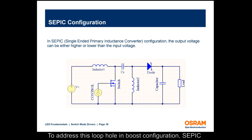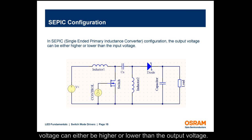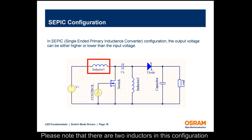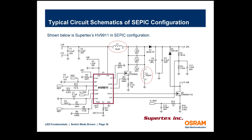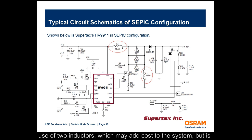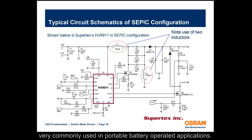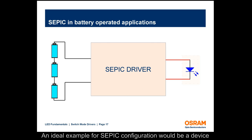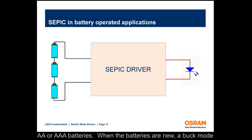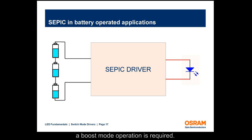To address this loophole in boost configuration, SEPIC configuration is used. In a SEPIC configuration, the input voltage can either be higher or lower than the output voltage. Note that there are two inductors in this configuration compared to only one in the previously explained modes; the addition of the inductor may slightly increase cost. SEPIC is very commonly used in portable battery-operated applications. An ideal example would be a device with a single LED with a VF of around 3.2 volts operated with three AA or AAA batteries — requiring buck-mode operation when batteries are new, and boost-mode operation when batteries drain below 3.0 volts.